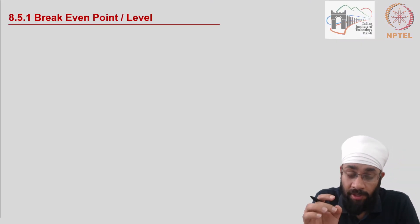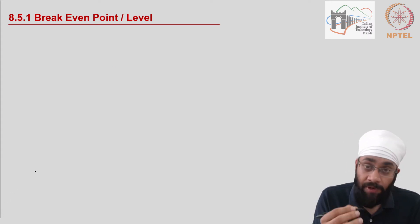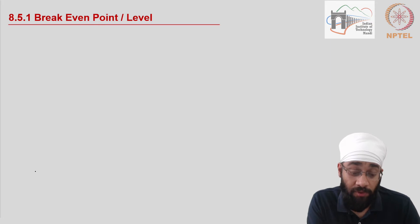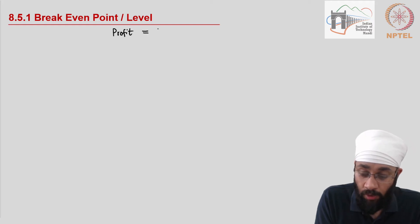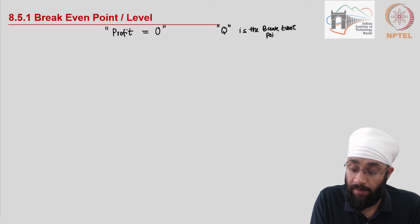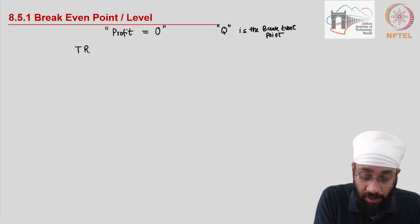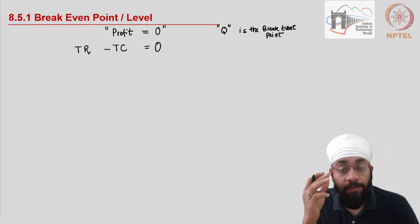Let me delve into it using some algebra. If we agree that the break-even point is the point where profit is zero — you are just moving from losses to profits and you're at a point of zero loss, zero profit — then we are at a situation where profit equals zero. How do you calculate profit? Profit is simply the difference between the total revenue and the total cost of the business, and this difference is zero at the break-even point.